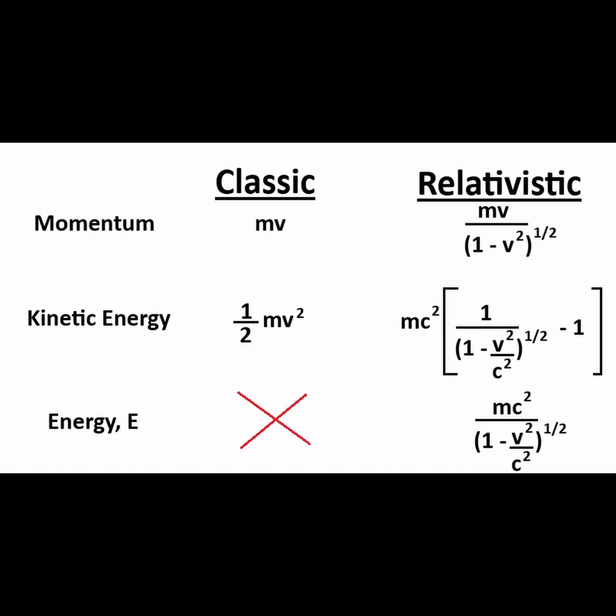Finally, the formula for the energy of an object is the following. Look at what happens when we set the velocity equal to zero, when the object is at rest. We're left with one of the most famous equations in science, E equals mc squared.